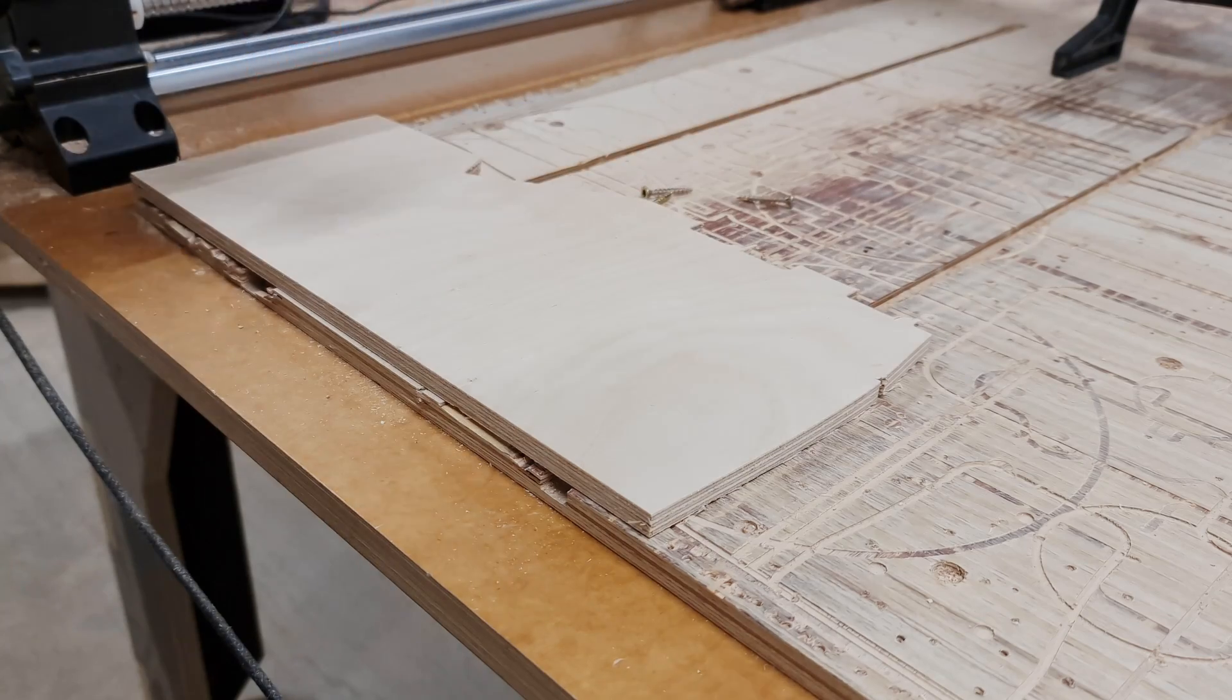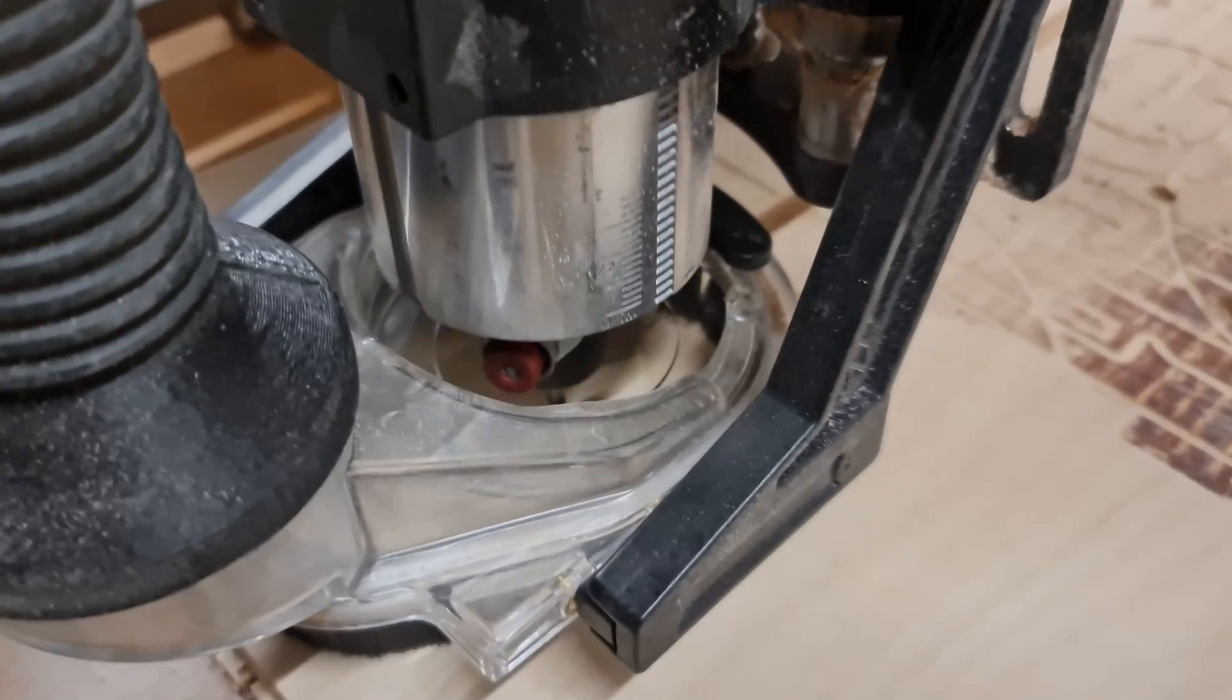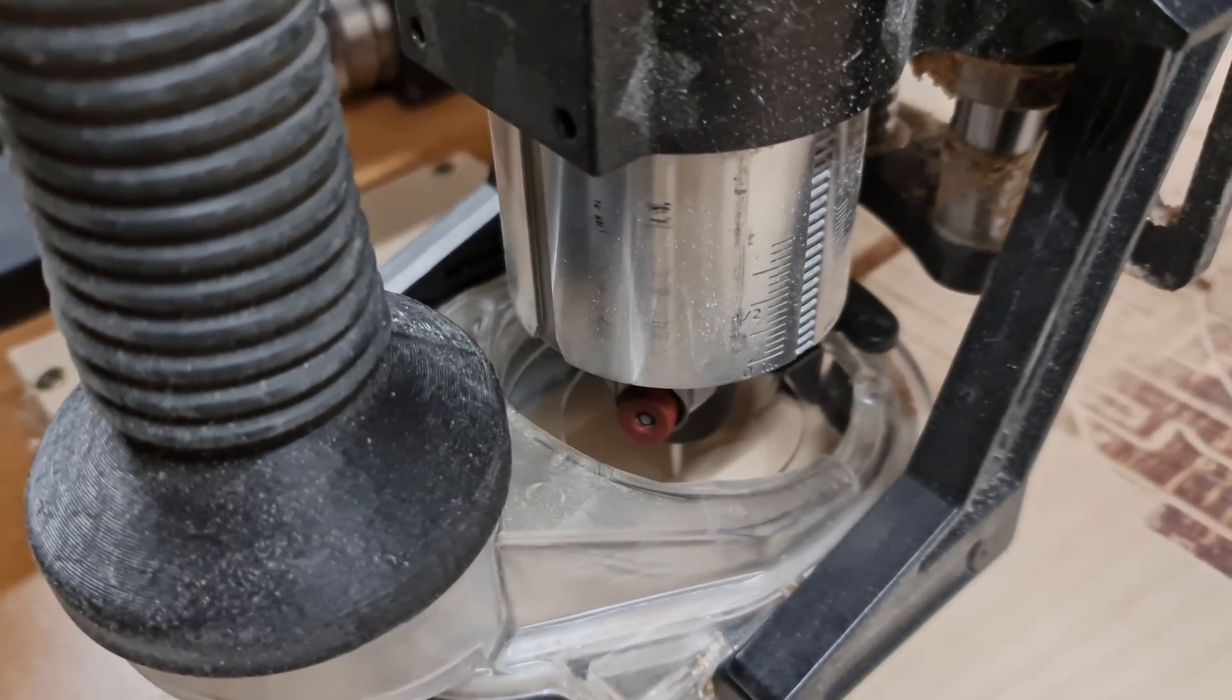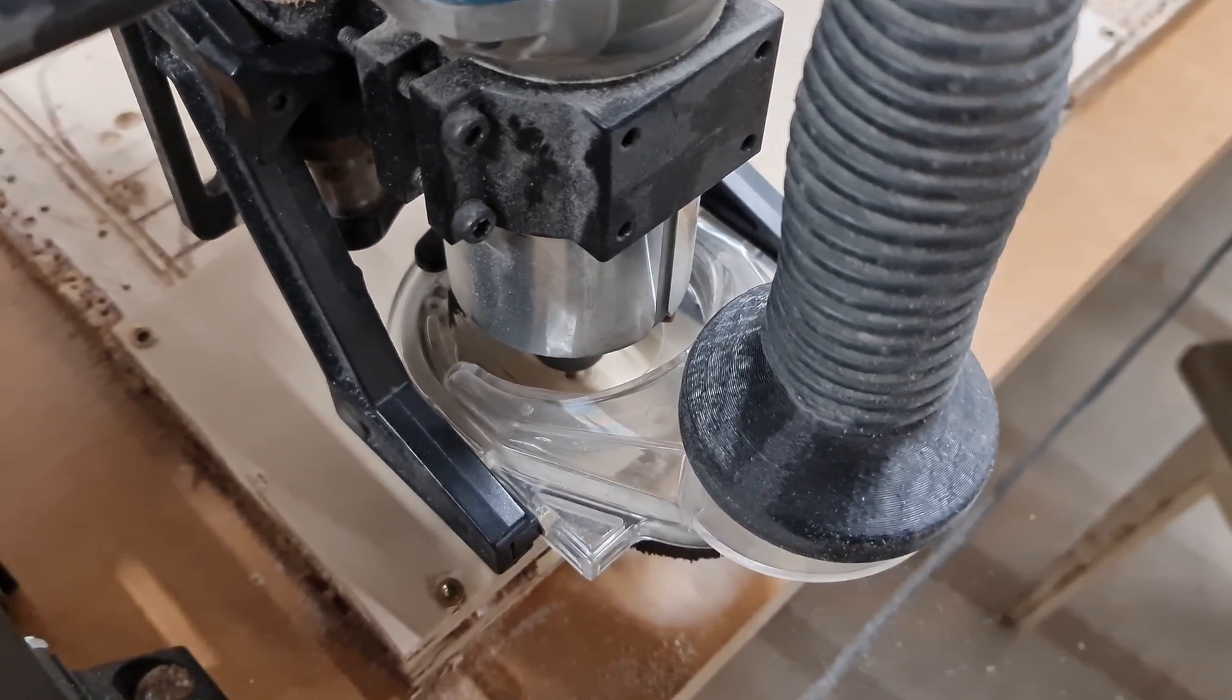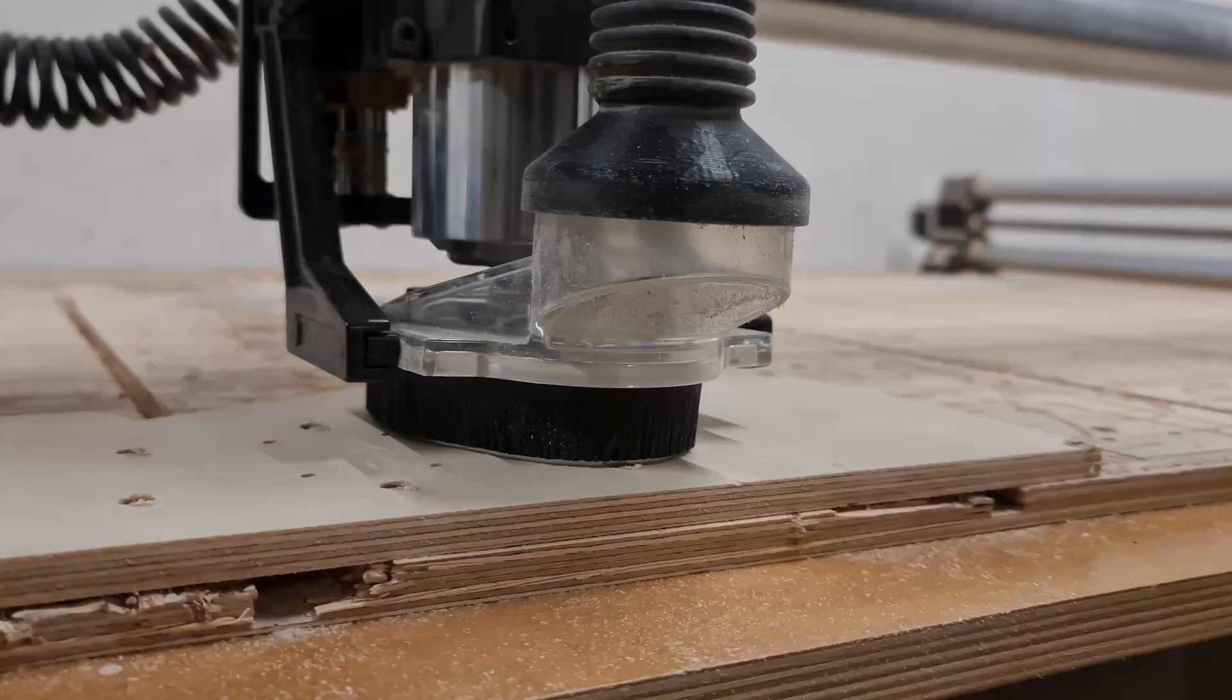So I found a suitable 9mm thick plywood offcut for the jig and went to cut all the components on the CNC router. As always, I started the cuts with the screw holes, pockets for the M8 screws, and the mortises.